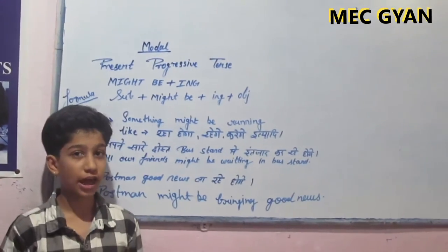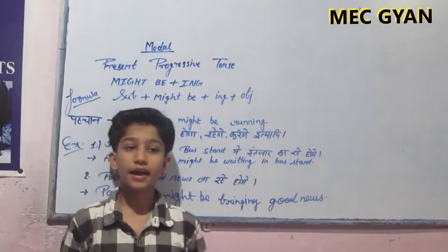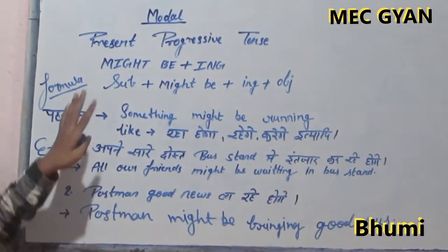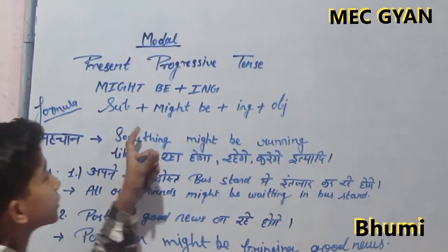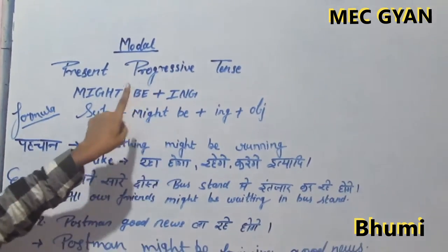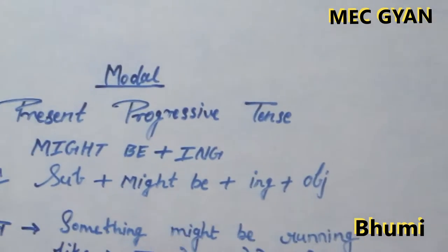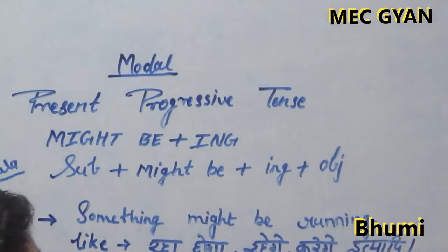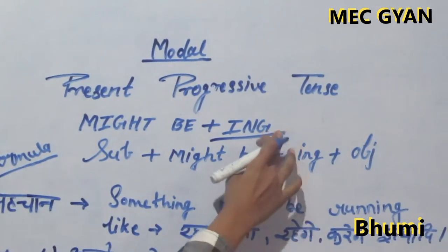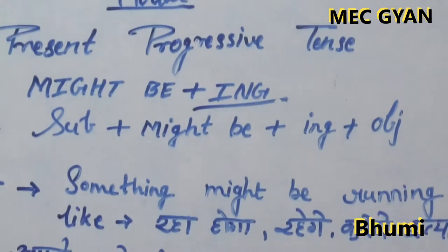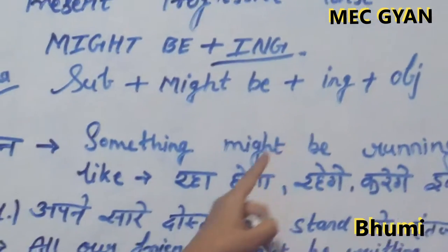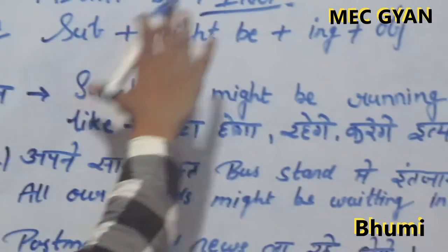Hello friends, here is Oji and I am Bhumi. Today I will tell about the present progressive tense. This is a model sentence and it is present progressive tense because we use 'might be' plus ing in this sentence.